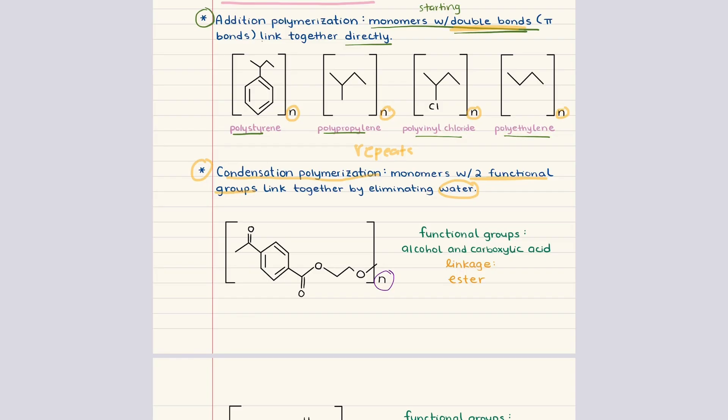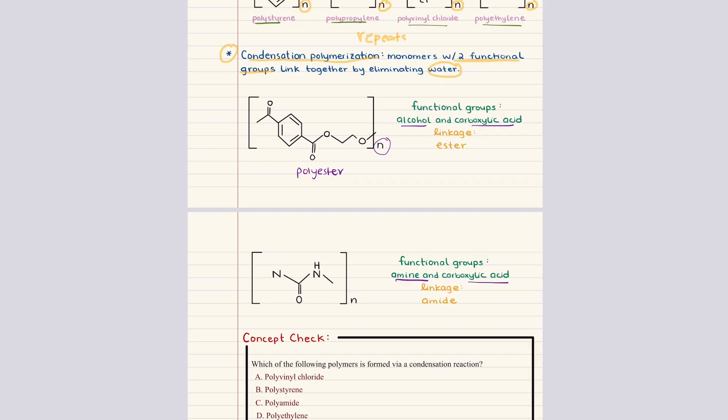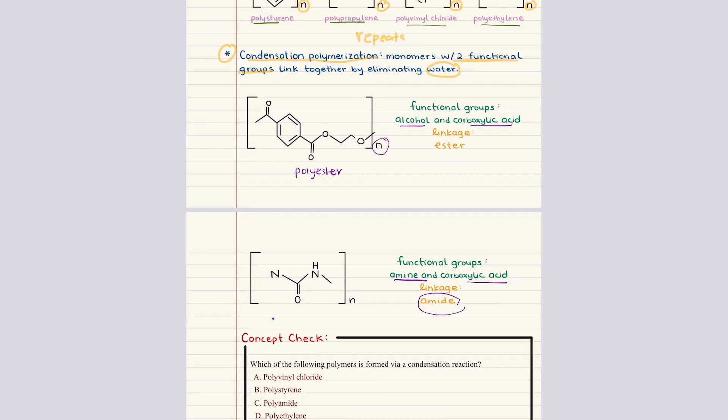So if an alcohol reacts with a carboxylic acid, that linkage formed is going to be an ester and the polymer produced is a polyester. If an amine reacts with a carboxylic acid, the linkage formed is an amide and the polymer is a polyamide. The key idea is that each monomer must have two reactive ends so that the chain can continue to grow in both directions.